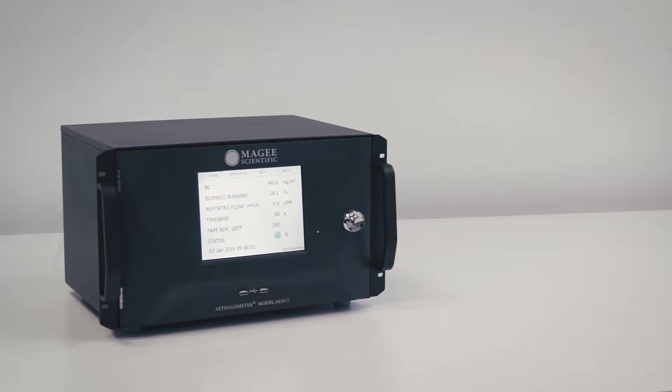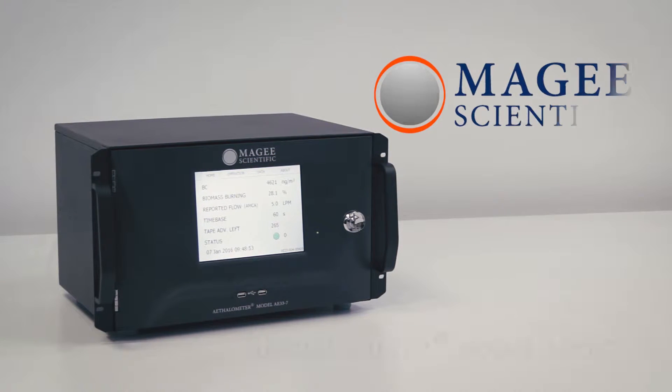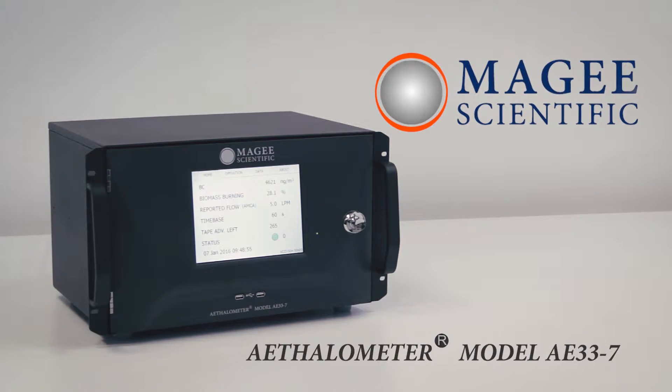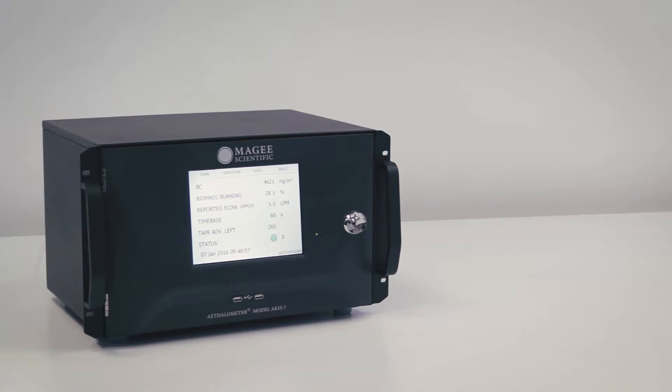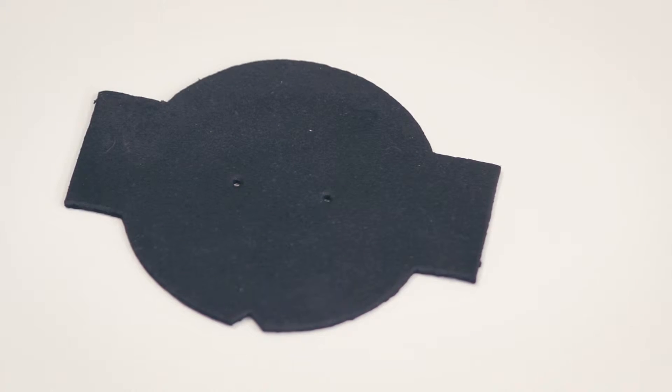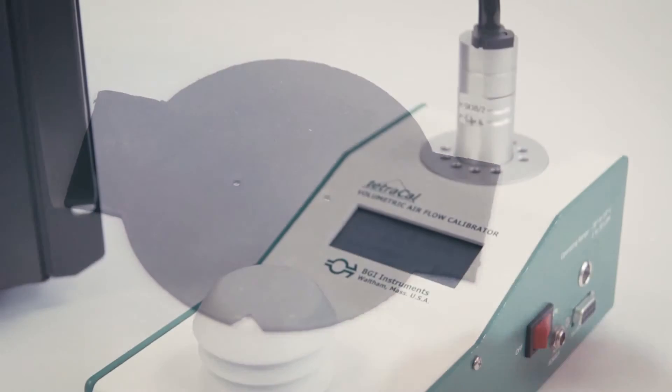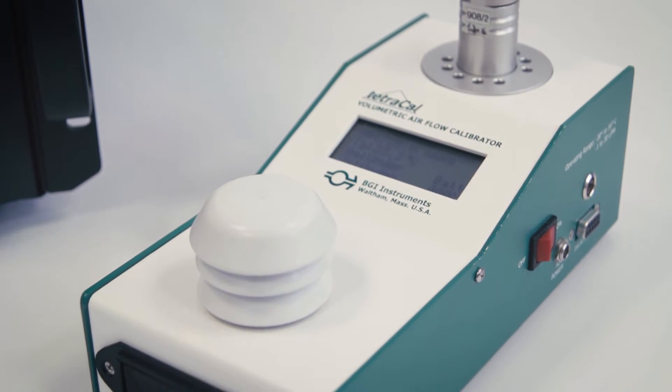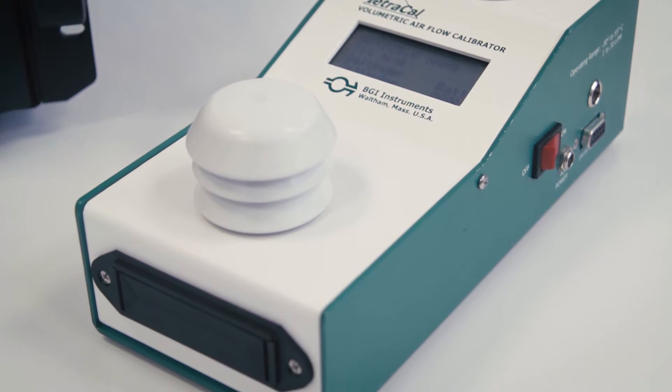This video shows the operations of the leakage test for the model AE-33 Aethalometer. For this test, you will need the flow calibration rubber pad, which is a standard accessory of the AE-33, and an air mass flow meter, which you can connect externally to the sample inlet port.